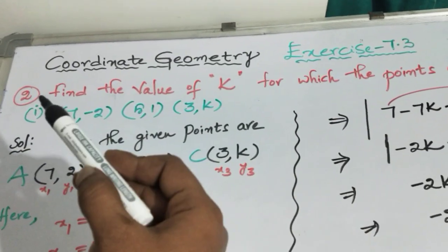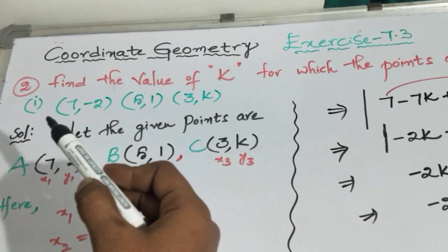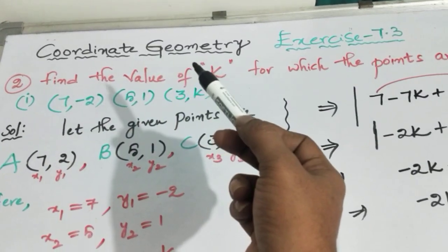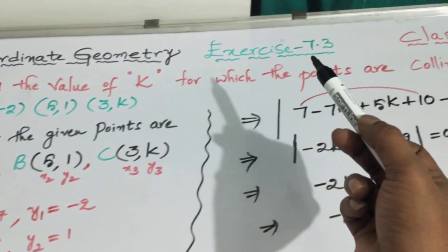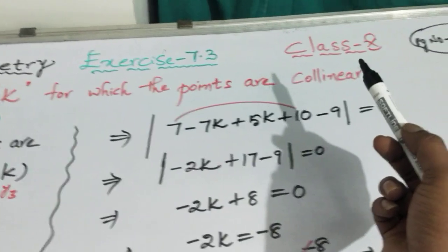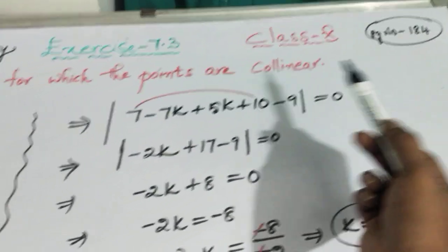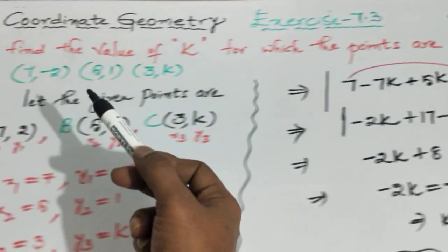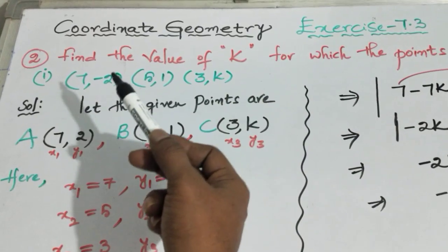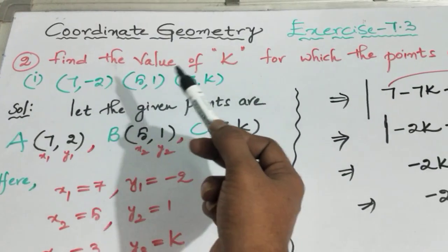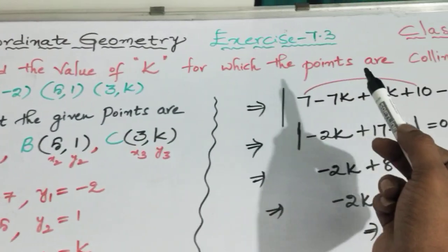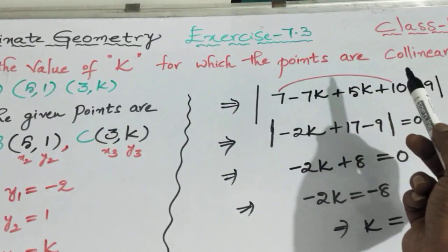Here is the second Roman numeral first question — same topic, coordinate geometry, Exercise 7.3 for Class 10th textbook, page number 184. Find the value of K for which the points are collinear.